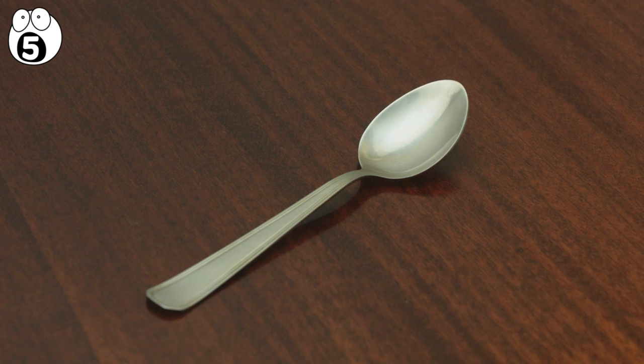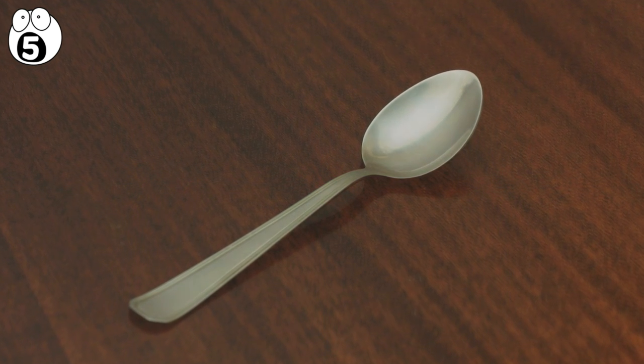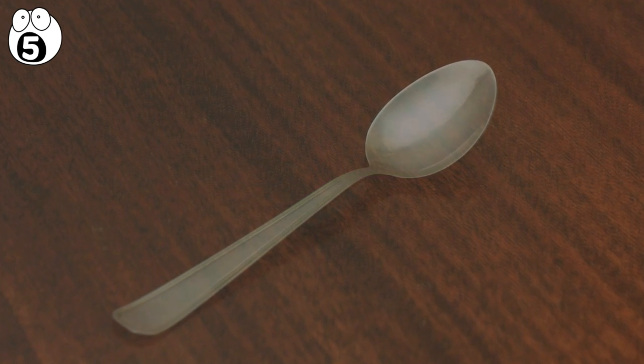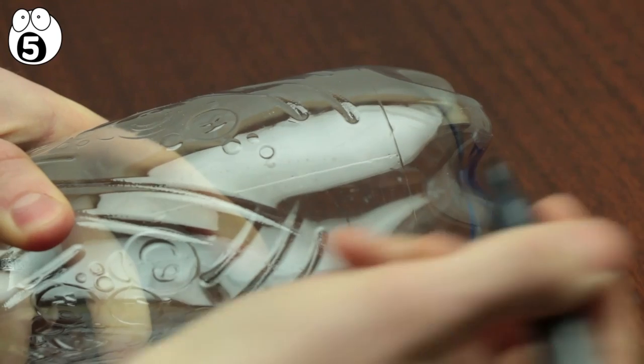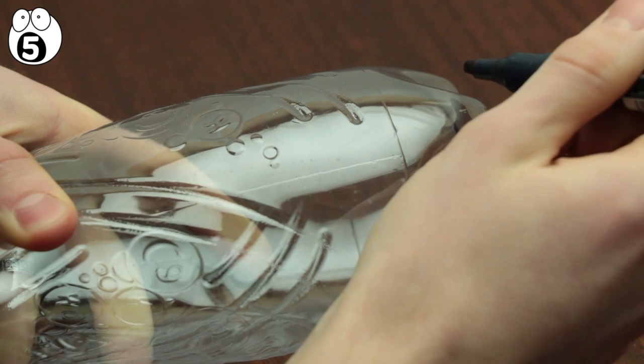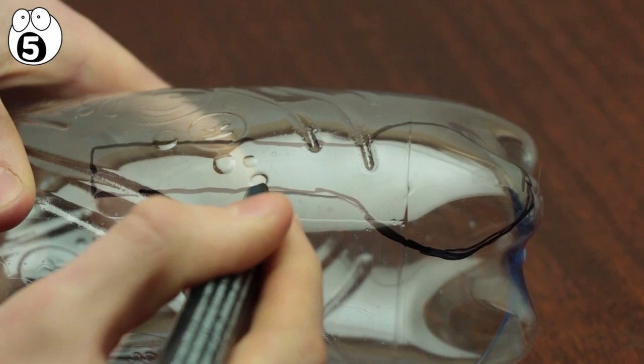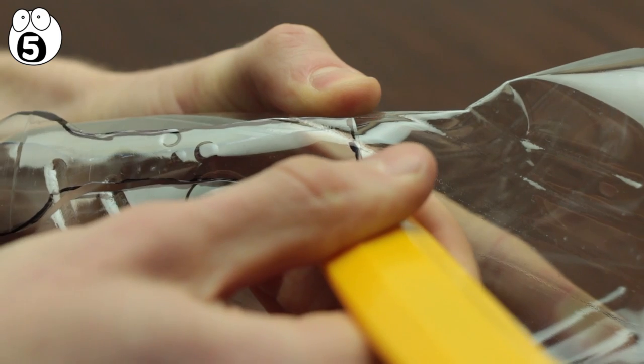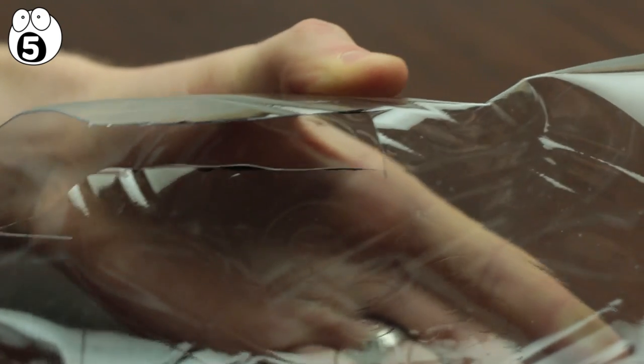If you've also been clumsy enough to have forgotten the world's most useful utensil, the spoon, then it's fine because you can make that from plastic bottles too. This is all possible due to the bowed end of this plastic bottle. All you'll have to do is draw a spoon design on the bottle with a permanent marker and cut it out with a utility knife like this.